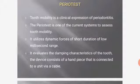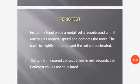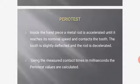Periodist: Tooth mobility is a clinical expression of periodontitis. The Periodist is one of the current systems to assess tooth mobility. It utilizes dynamic forces of short duration in the low millisecond range and evaluates the damping characteristics of the tooth. The device consists of a handpiece connected to a unit via cable. Inside the handpiece, a metal rod is accelerated until it reaches its nominal speed and contacts the tooth. The tooth is slightly deflected and the rod is decelerated. Using the measured contact times in milliseconds, the Periodist values are calibrated.